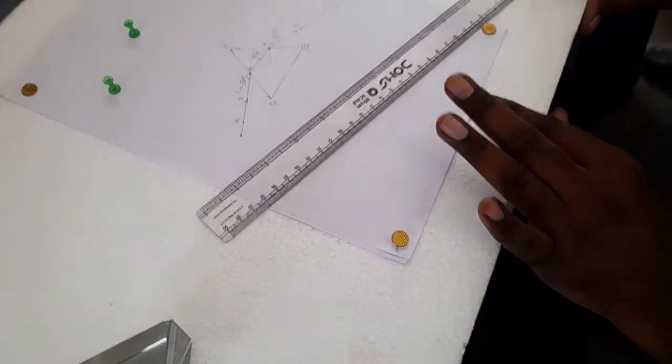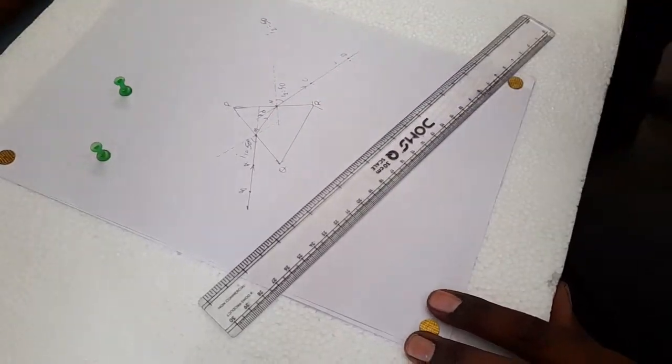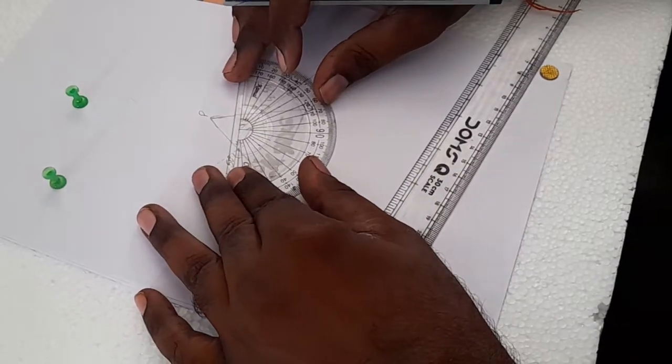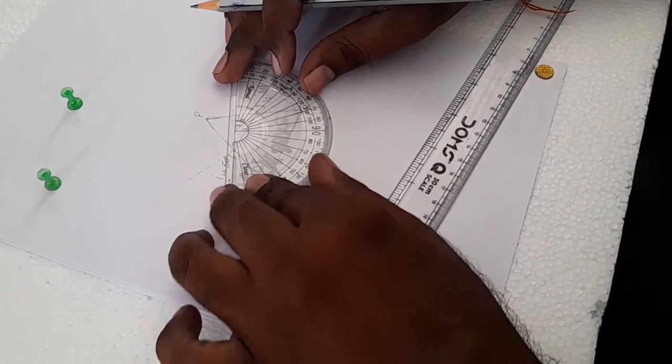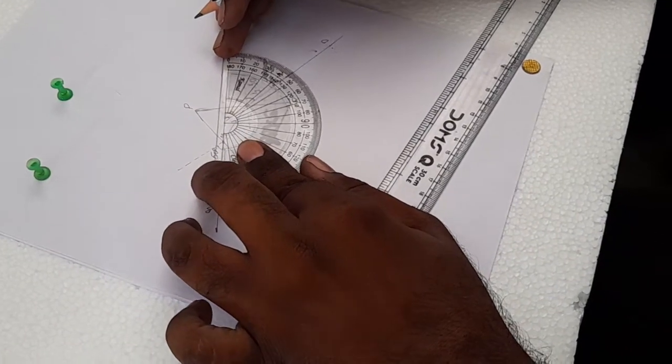The angle of deviation is nothing but the angle between incident ray and the emergent ray. So we need to calculate it also with the help of protractor. So here we found the angle of deviation as 45 degrees.